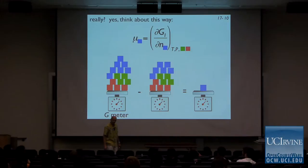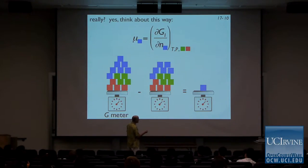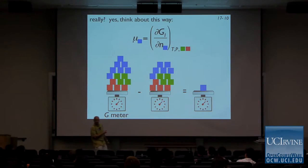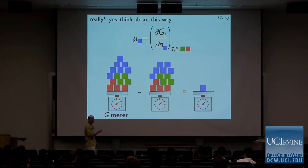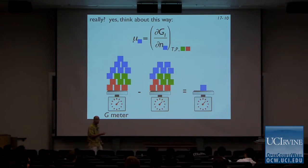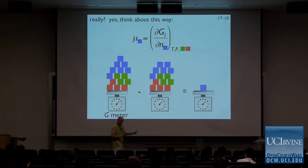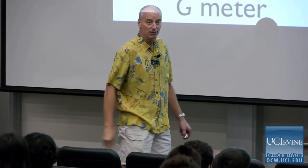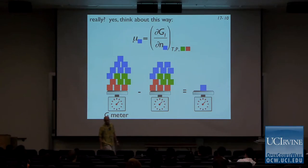Now it's clear: this is just the chemical potential of blue. But it's not the chemical potential of blue always — it's the chemical potential of blue exactly when the composition of the system is as shown, with green, orange, and the other blue present. The chemical potential could be different if there were different amounts of the other components. But we're always talking about the chemical potential of this pure component — in this case, the blue blocks.